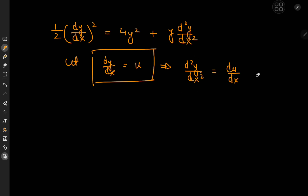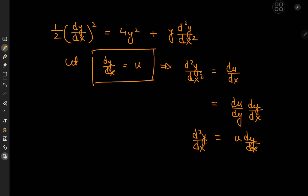Working further with the second derivative, we can write it as du/dy times dy/dx. And dy/dx is our u variable, so we have u times du/dy equal to the second derivative of y with respect to x.